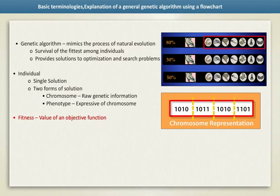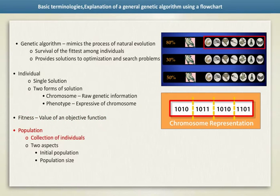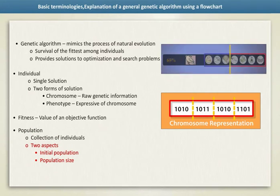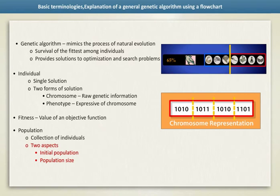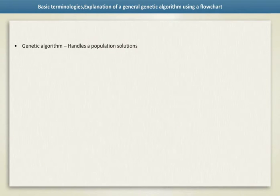The fitness of an individual is the value of an objective function for its phenotype. Population is a collection of individuals. Two important aspects of population are initial population generation and population size. The population size depends on the complexity of the problem. Genetic algorithm handles a population of possible solutions.